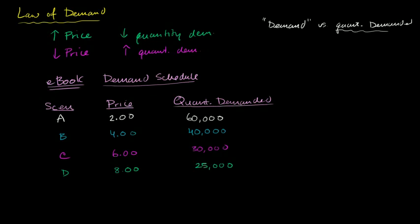And I'll do one more of these and see what color I have not used yet. I haven't used yellow yet. Scenario E, if I raise it to $10, now the quantity demanded, let's just say it is 23,000.